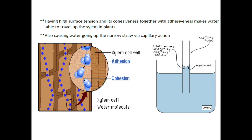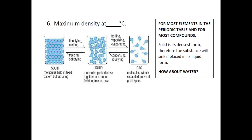Having high surface tension together with cohesiveness and adhesiveness also causes water to go up a narrow straw via capillary action. When you place a straw into your drink, you can observe that the water level within the straw is always slightly higher compared to the water level outside the straw. One water molecule is attracted to the wall of the straw — an interaction we call adhesion — and when it climbs up the wall, it pulls up the next water molecule, causing the overall level of water within the straw to be higher compared to outside.